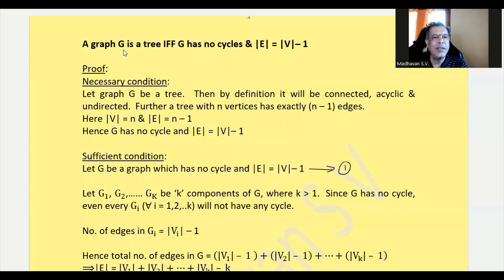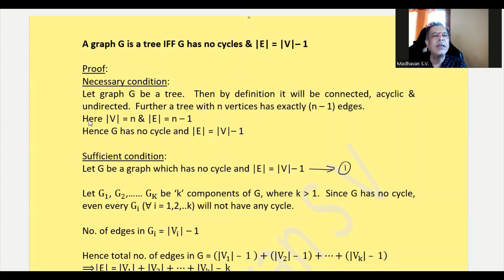A graph G is a tree if and only if G has no cycles and the number of edges equals the number of vertices minus 1. Since there is an if and only if, we have to prove from the necessary condition angle and the sufficient condition angle.